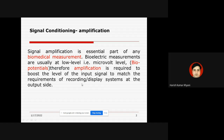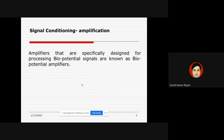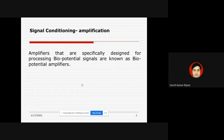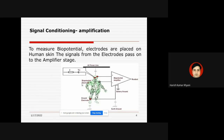This slide gives the requirement of amplification in the biomedical field. Normal amplifiers are not used here because of certain reasons, which will be discussed in the next slide. The bio-potential signals, which are at very low level, are processed with the help of a special type of amplifiers known as bio-potential amplifiers.